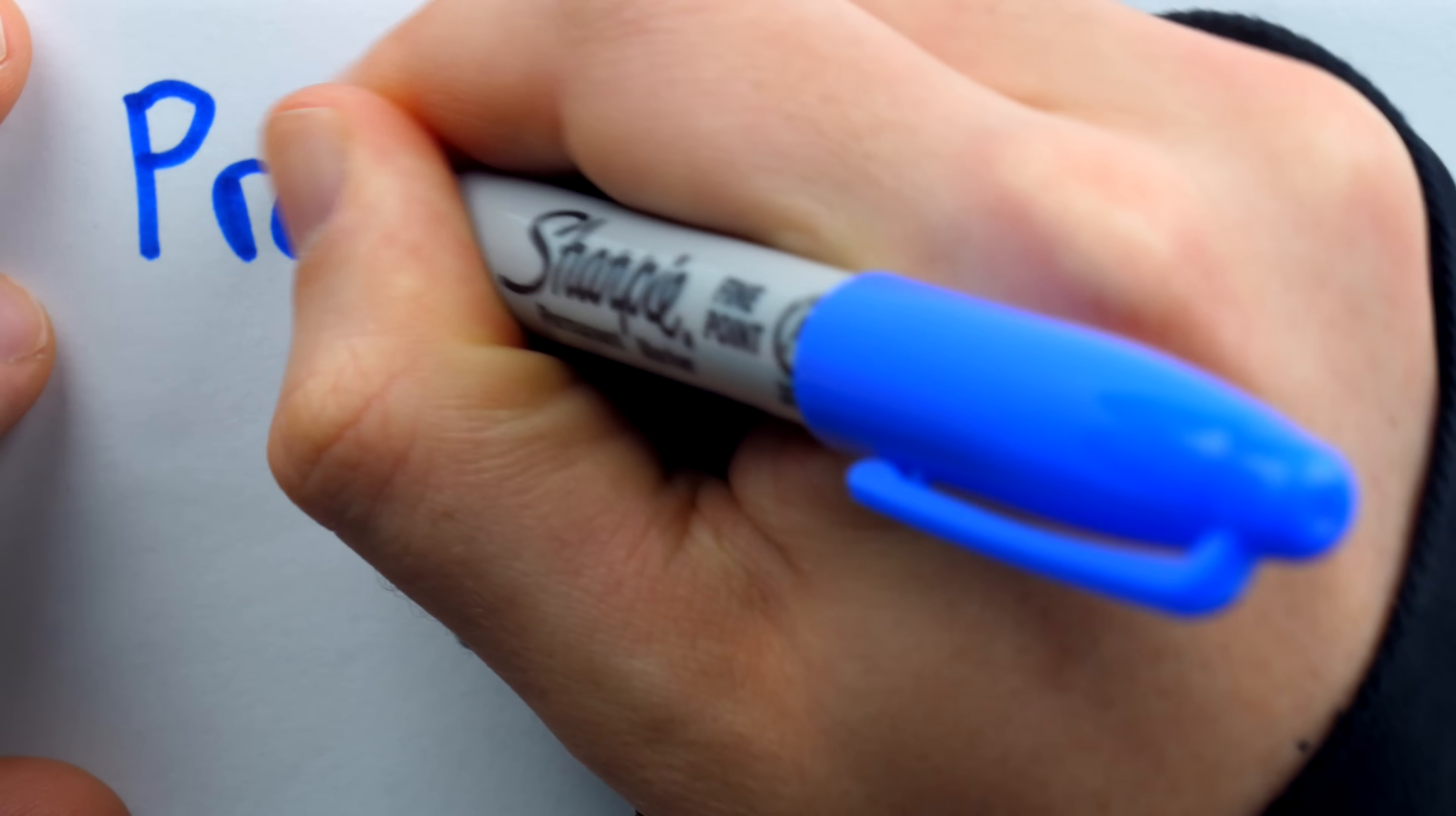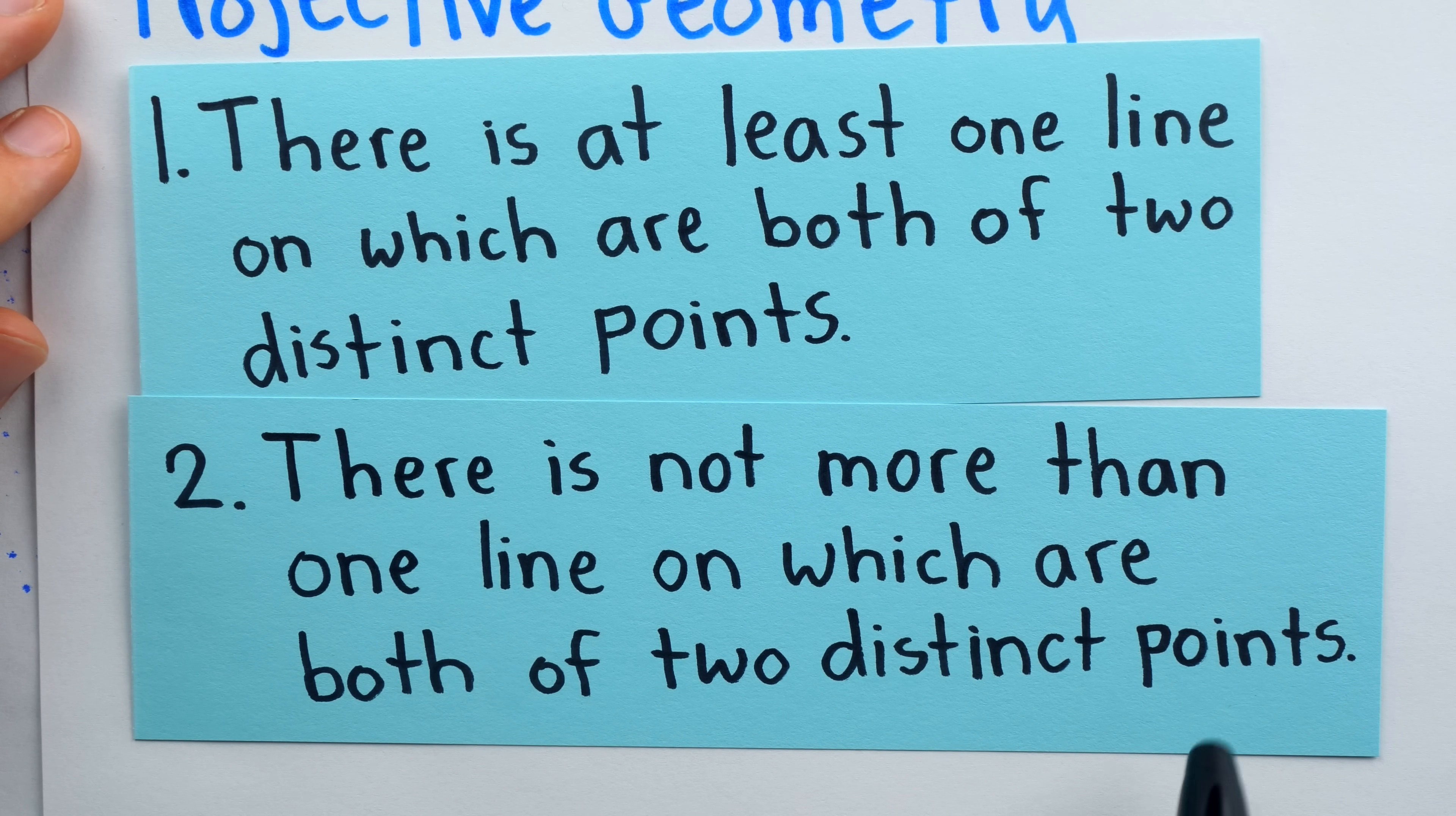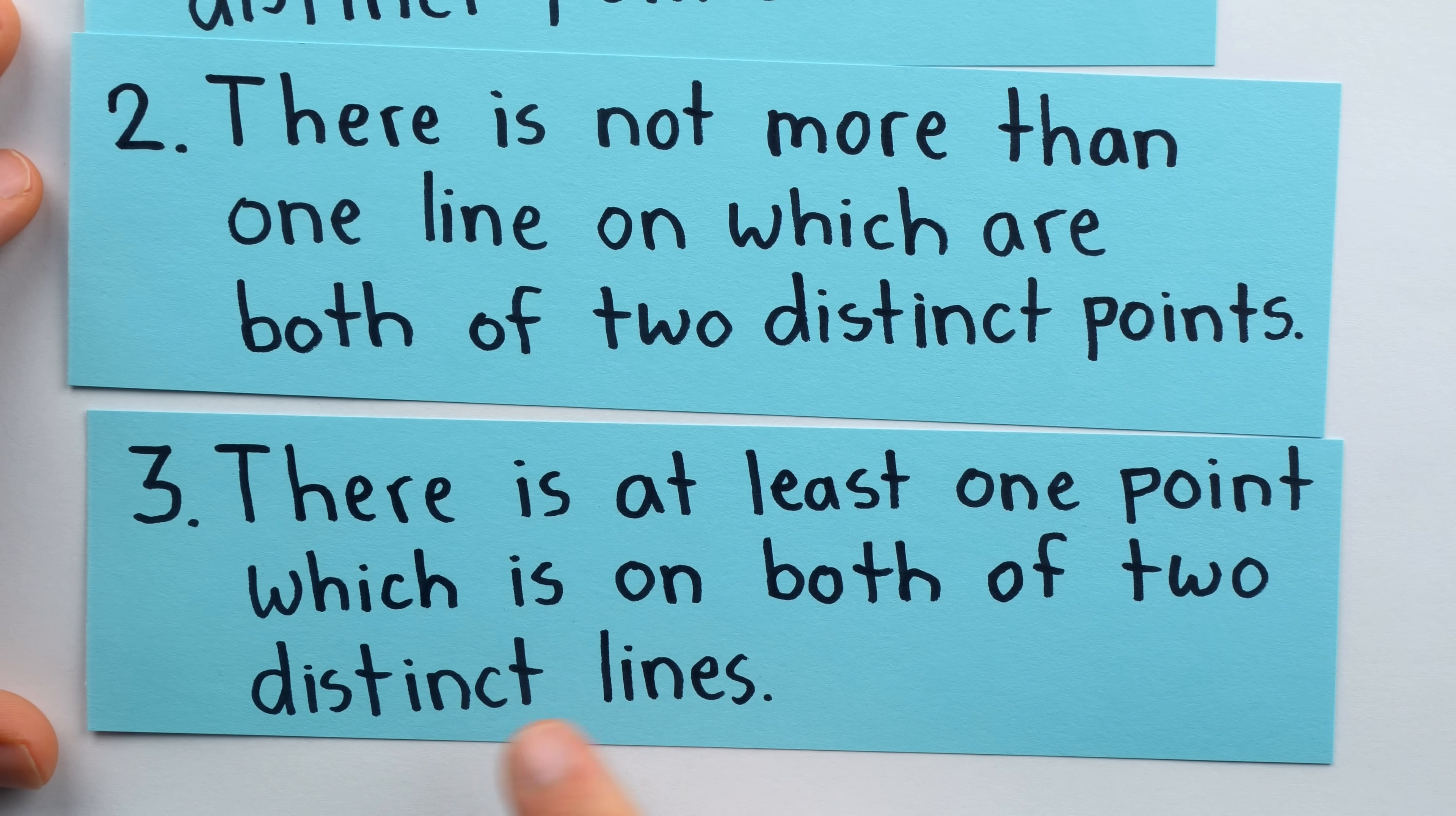One type of finite plane geometry is what's called the projective geometry. And here are the three axioms defining projective geometry as they appear in the O'Hara and Ward text on the subject. Axiom 1 is there is at least one line on which are both of two distinct points. Axiom 2 says there's not more than one line on which are both of two distinct points. And axiom 3 says there is at least one point which is on both of two distinct lines.